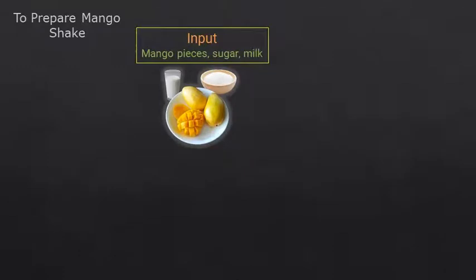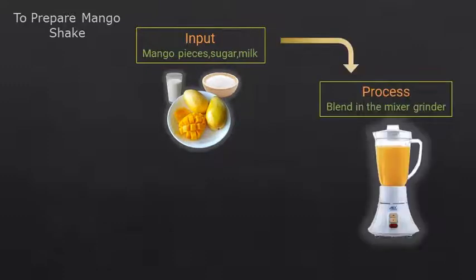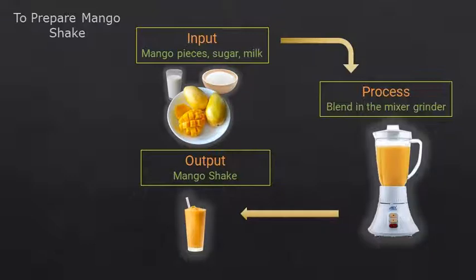To prepare mango shake: putting mango slices, sugar, and milk in the mixer is input, switching on the mixer to make the mango shake is process, and pouring mango shake in a glass and serving is output.